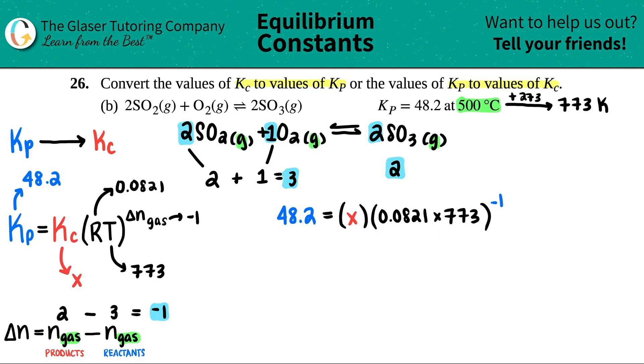So let's just do this first. 48.2 equals the X times whatever this is. Let's see. 0.0821 times 773. I get 63.4633. Close it up. Raise it to the negative 1. Now I'm going to do that. So raise that to the negative 1.